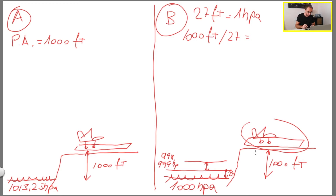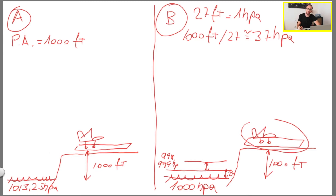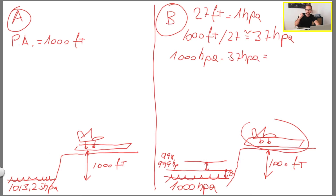So the pressure difference between mean sea level and the aircraft is 37 hectopascals. In order to know the pressure around the airplane, we subtract the pressure difference from the QNH. So 1000 hPa minus 37, which was the difference calculated over those 1000 feet, gives us 963 hectopascals.